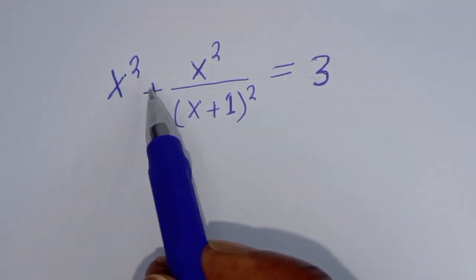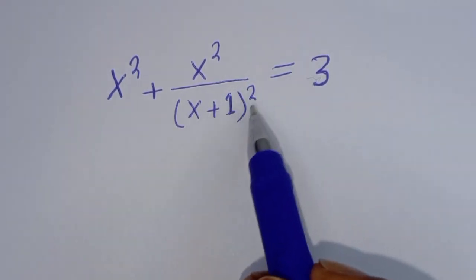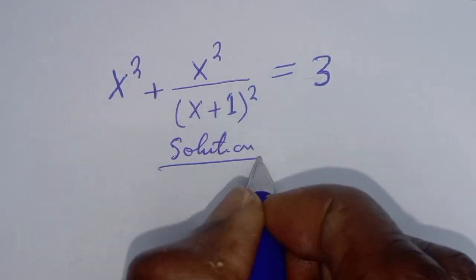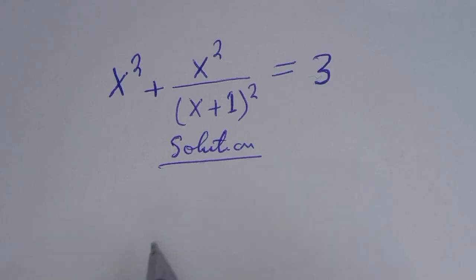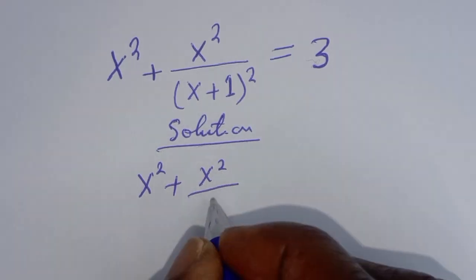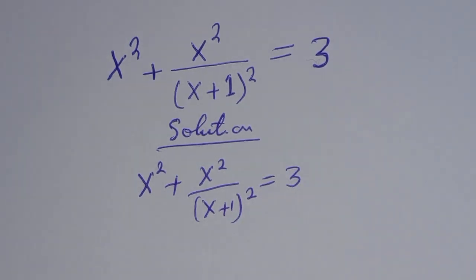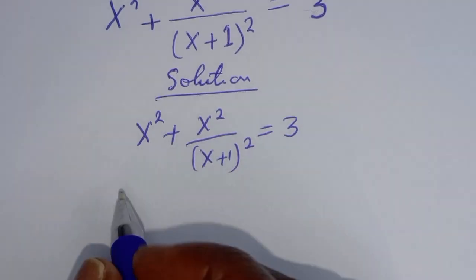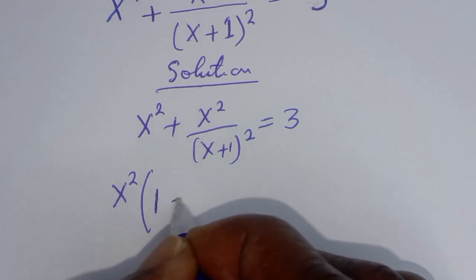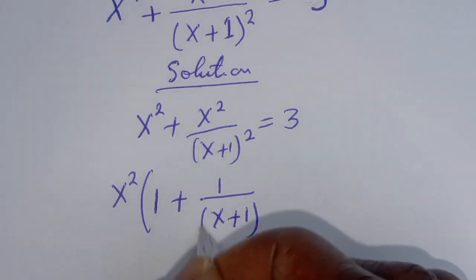Hello. How to solve for s from this given math olympiad problem: s squared plus s squared over (s plus 1), all squared, is equal to 3. Now here, in the numerator, let's bring s squared out — this is s squared bracket, divided by this, we have one plus one over (s plus 1), all squared.